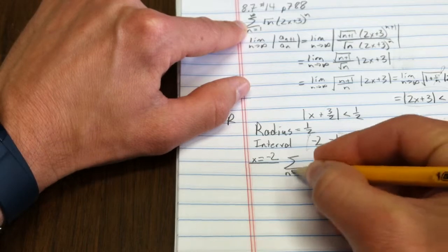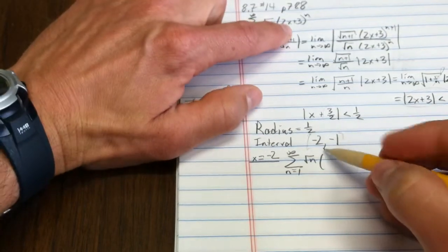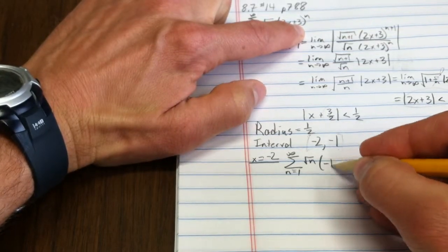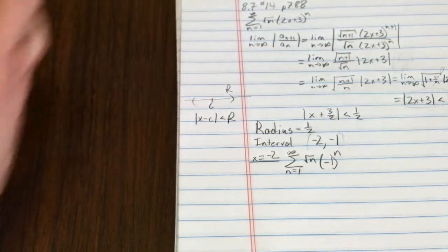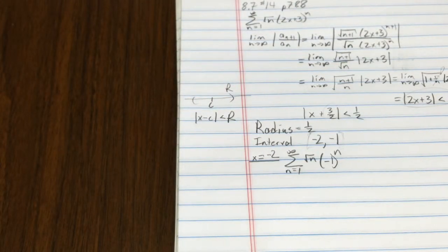In that case, I have the sum n equals 1 to infinity of the square root of n times, let's see, that's negative 4 plus 3. So, that's just negative 1 to the n. Okay. So, what test shall we use here?